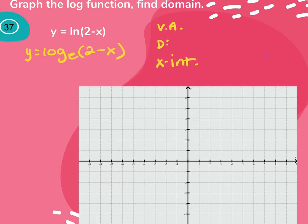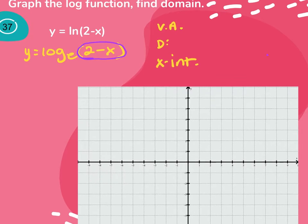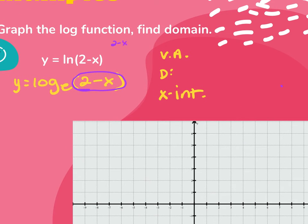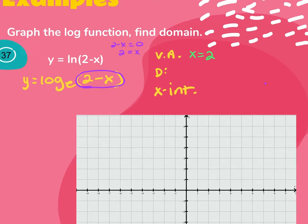Before converting this expression, I'm going to look at what's in the parentheses to find the vertical asymptote. I set 2 minus x equal to 0, which means x equals 2. So the vertical asymptote is at x equals 2.